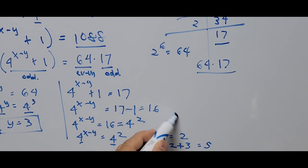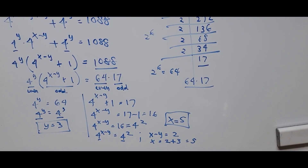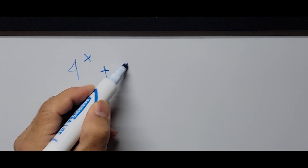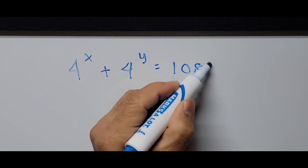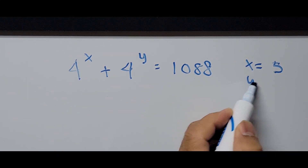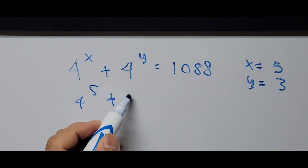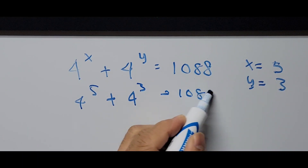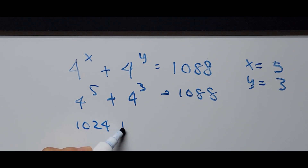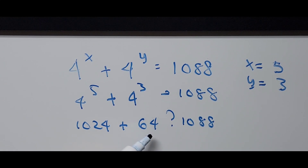Let's check our answers by substituting X equals 5 and Y equals 3 into the original equation: 4 to the power of 5 plus 4 to the power of 3 equals 1088. That gives us 1024 plus 64, and 1024 plus 64 equals 1088. This confirms the values of X and Y are correct.